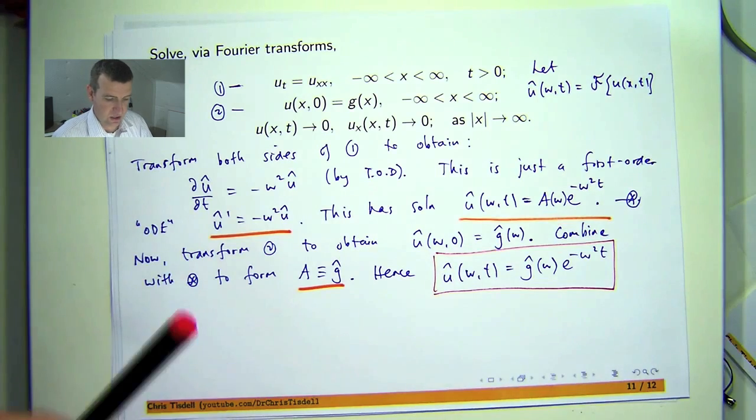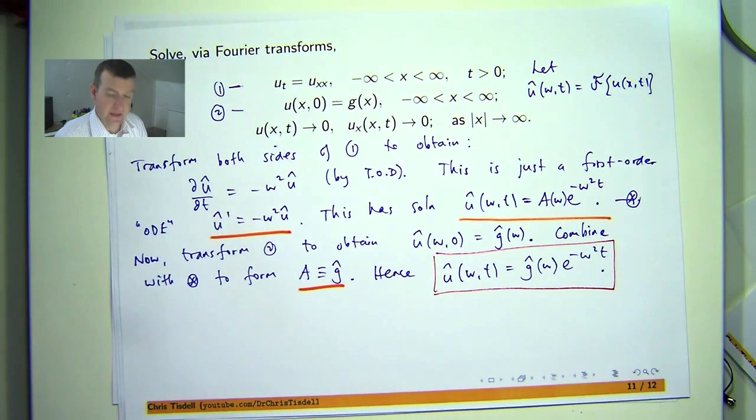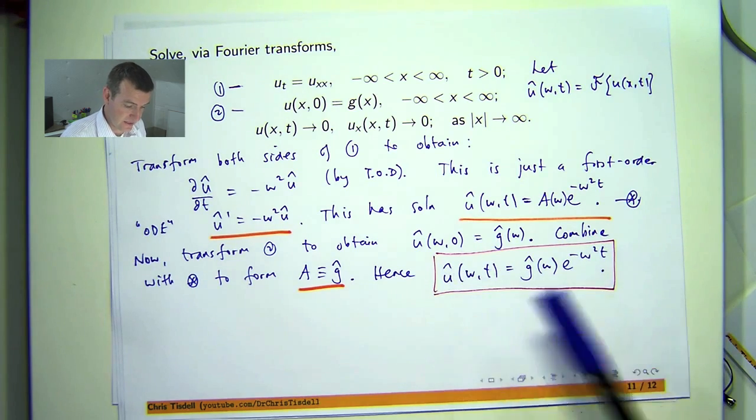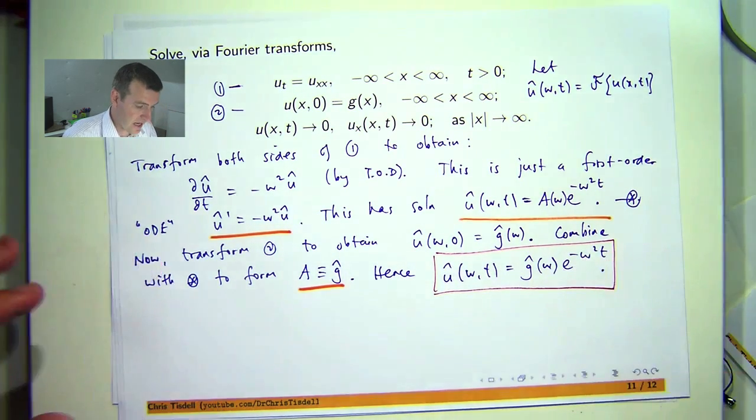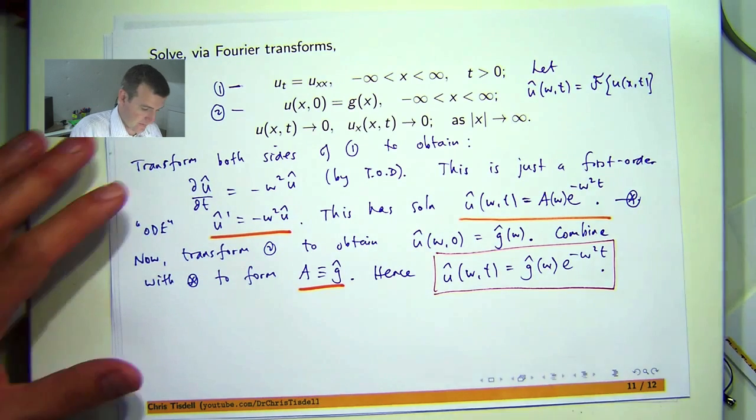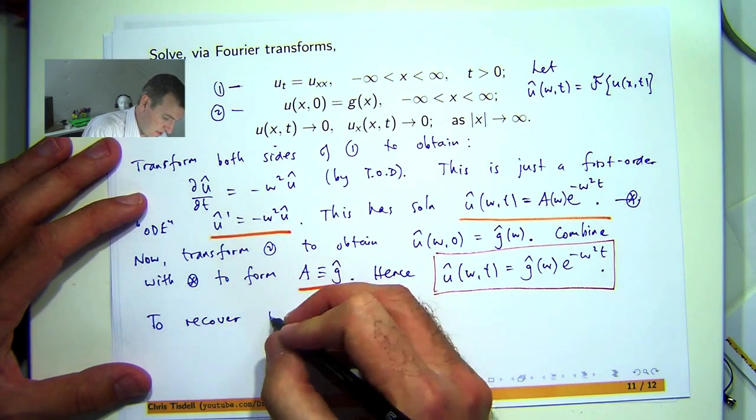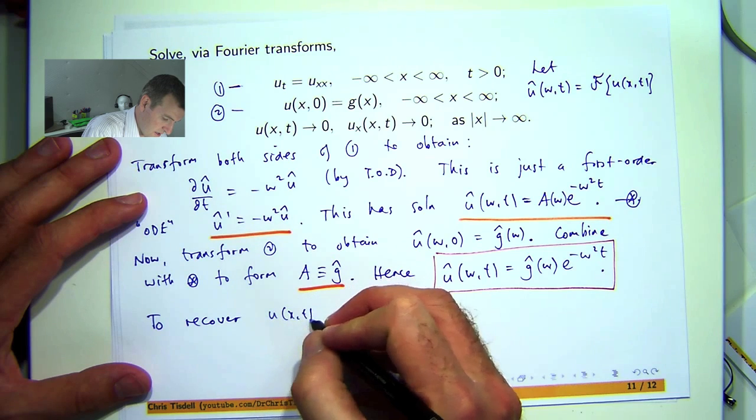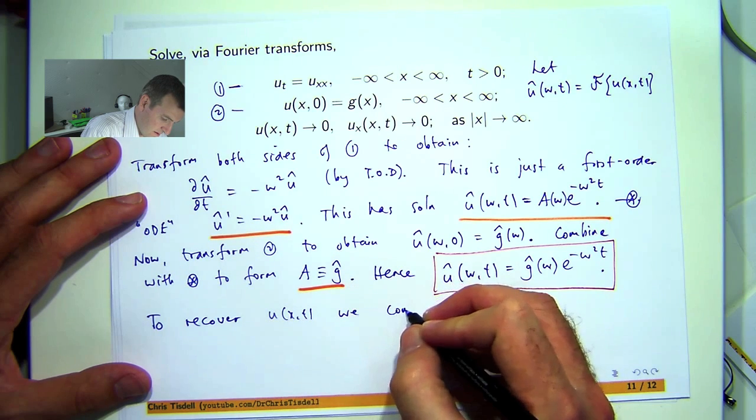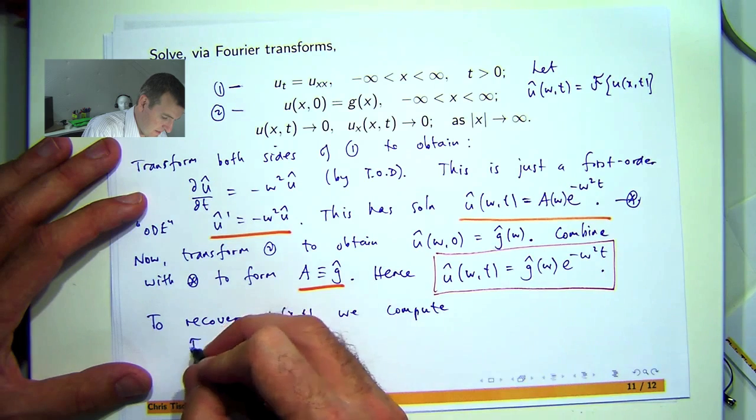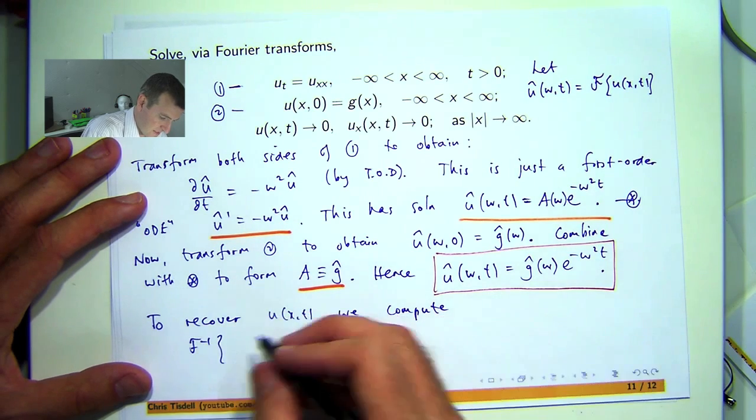So I can now write down my refined solution. So that is the solution to my transform problem. So what I would like to do now is invert this, or take the inverse transform, and recover u of x, t.